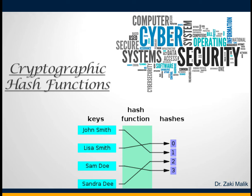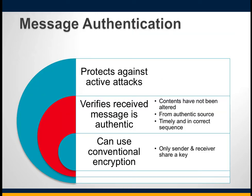Today's lecture is on cryptographic hash functions. Before we delve into the details, let's talk about some basics. We know that encryption protects against passive attacks like eavesdropping. A different requirement is to protect against active attacks — attacks that try to falsify data or transactions — such as attacks against messages or data authentication. A message, file, or document is said to be authentic when it is genuine and came from the alleged source.